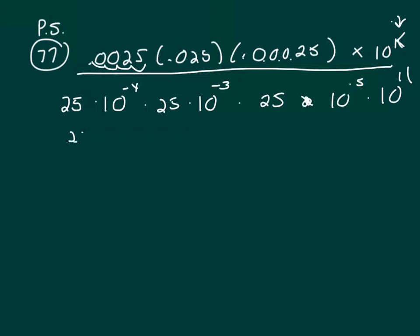So we've got 25 cubed. When you multiply like bases, you add your exponents, and that will be times 10 to the negative 12 times 10 to the K.